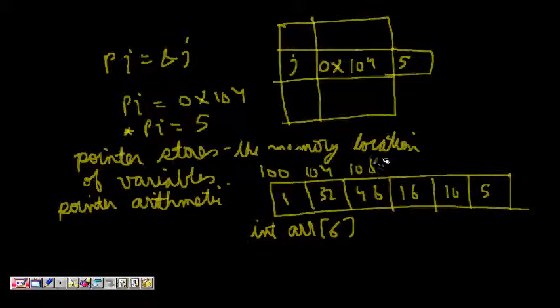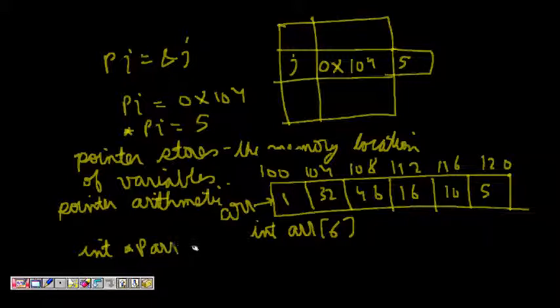104 and 8, 112. So now ARR, which is the array name, it is pointing to the array itself. So if I want to make an array int star P ARR and make it equal to ampersand ARR[0], so this means now I am pointing to the first element of this array. So what does pointer arithmetic mean now?